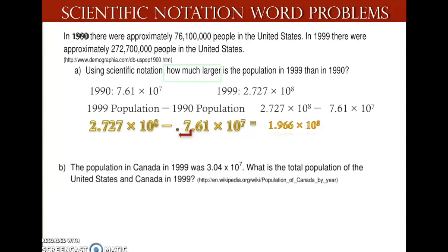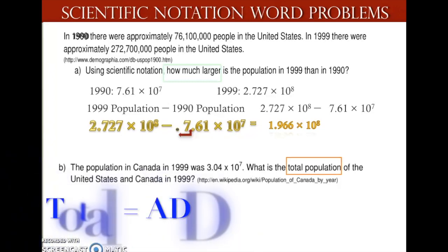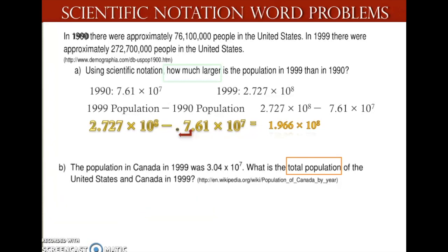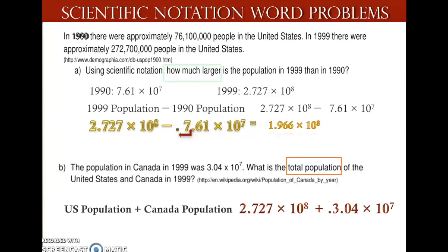Let's look at Part B. The population in Canada in 1999 was 3.04 times 10 to the 7th power. What is the total population of the United States and Canada in 1999? It asks for the total, so we're going to add. I have the U.S. population plus Canada's population: 2.727 times 10 to the 8th power plus 3.04 times 10 to the 7th power.